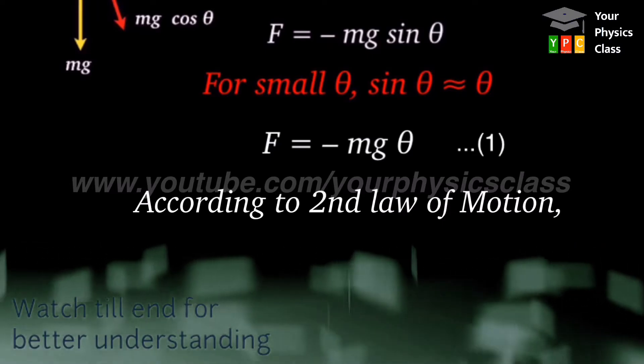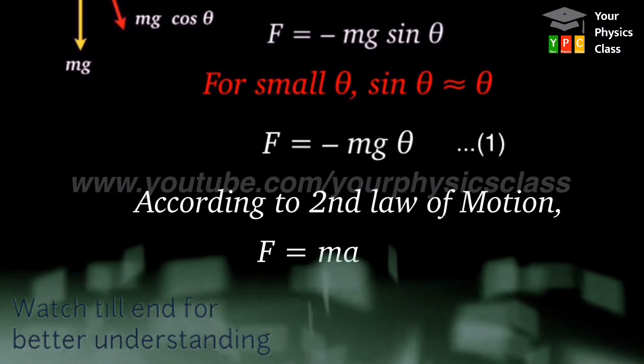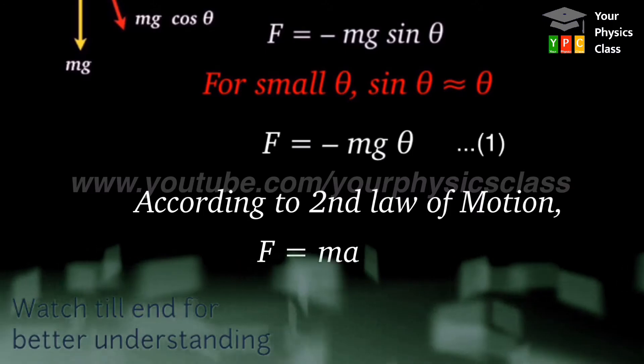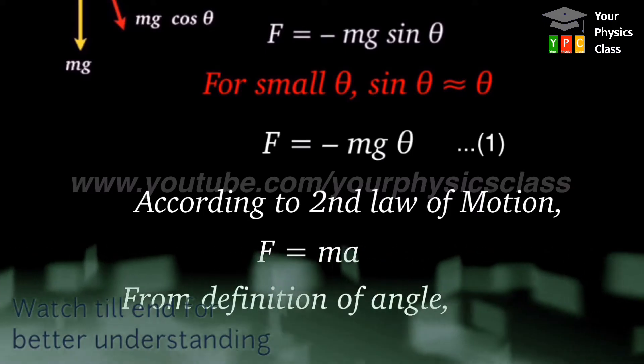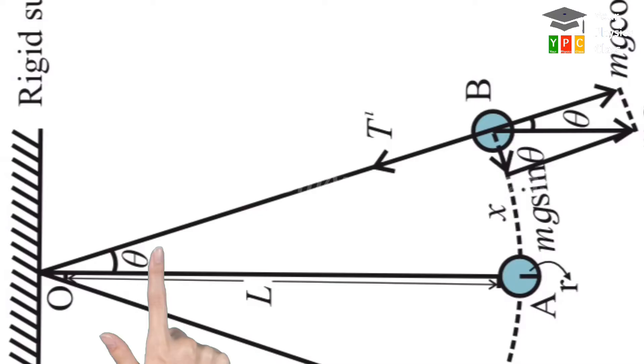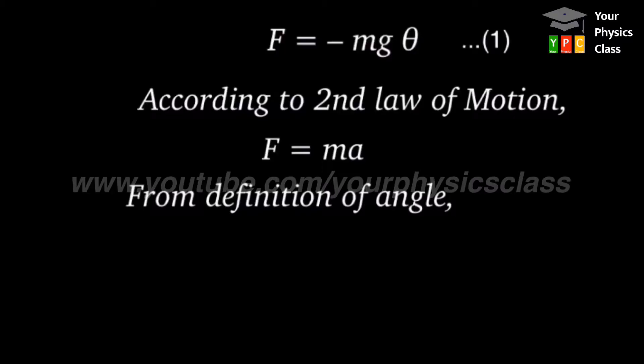According to second law of motion, force is a product of mass and acceleration. And by definition of angle, angle is equal to arc length upon radius. Here arc length is taken as x and the radius is equal to the length of pendulum. Hence theta is x by L.